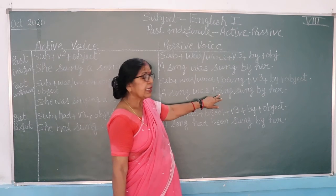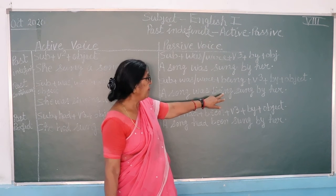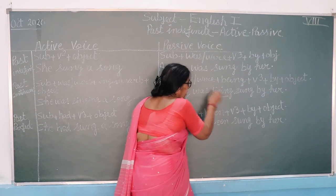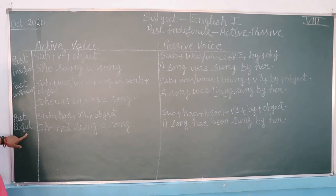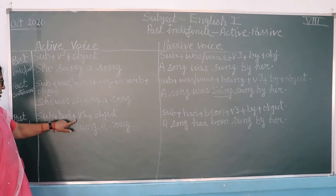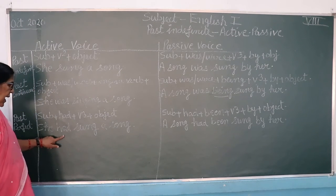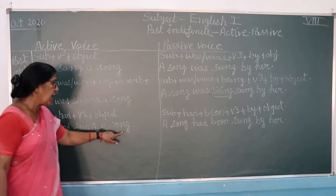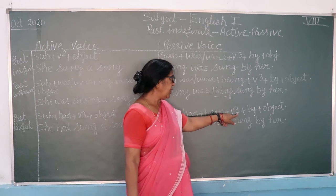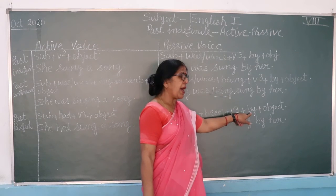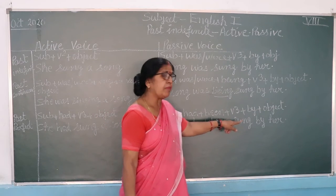'Being' has been added because the sentence is in the past continuous form. Now in the past perfect tense, the formula is: subject plus had plus been plus third form of the verb plus by plus object. For example: she has sung a song becomes — the song has been sung by her.